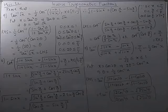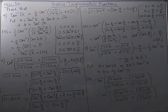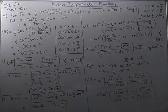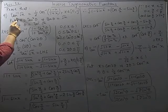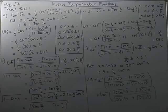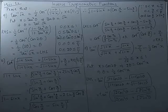Welcome children. Proceeding with our routine topic, inverse trigonometric functions, taking some more examples from it and continuing with the miscellaneous exercise. The ninth question is about proving that tan inverse of root x is equal to half of cos inverse of (1 minus x) over (1 plus x), where x belongs to the closed interval 0 to 1.